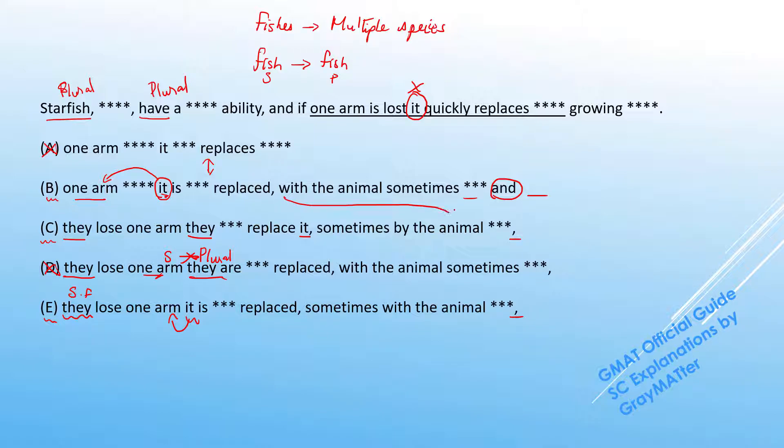In B, this whole with construction is acting as a modifier for the previous clause. So they have this ability and if one arm is lost, it is replaced, with the animal sometimes overcompensating and growing. So this makes perfect sense because it's modifying the clause in front of it.